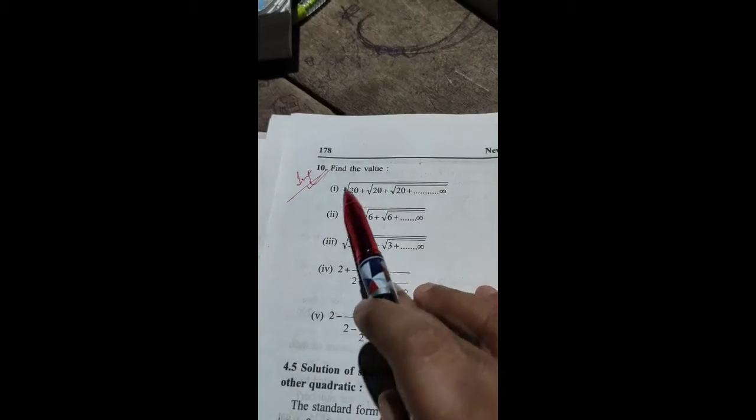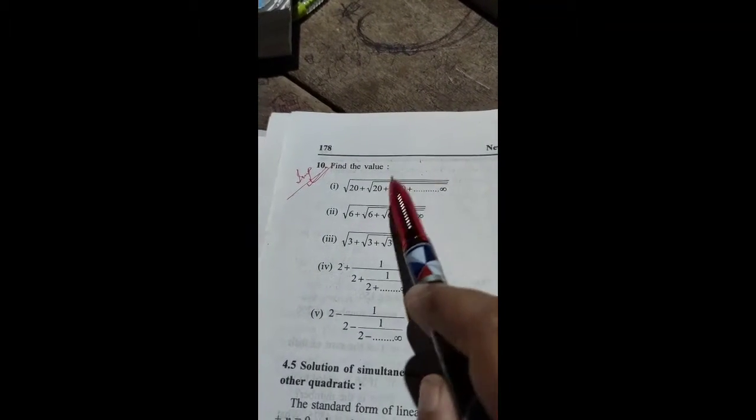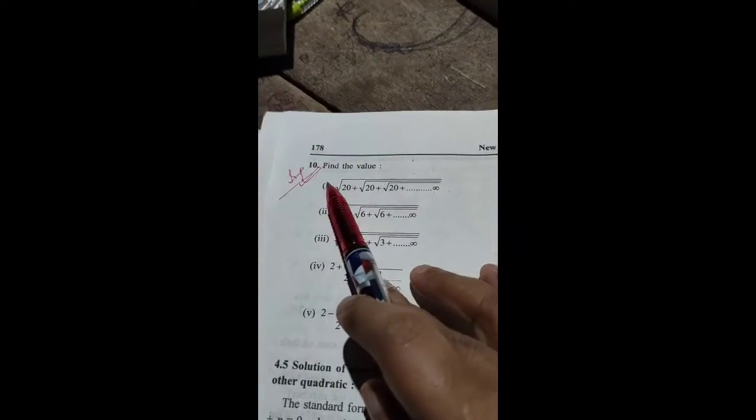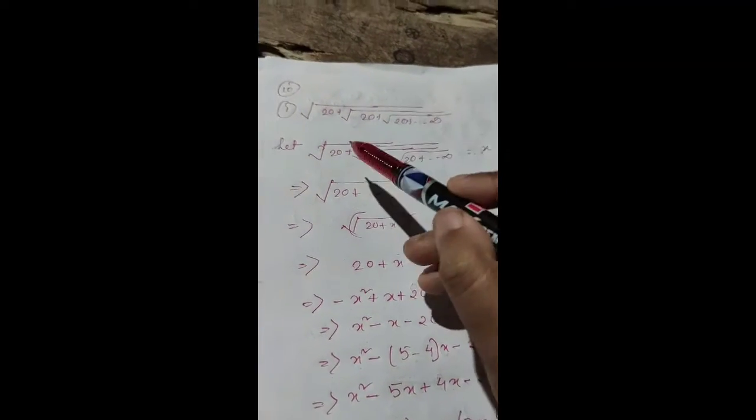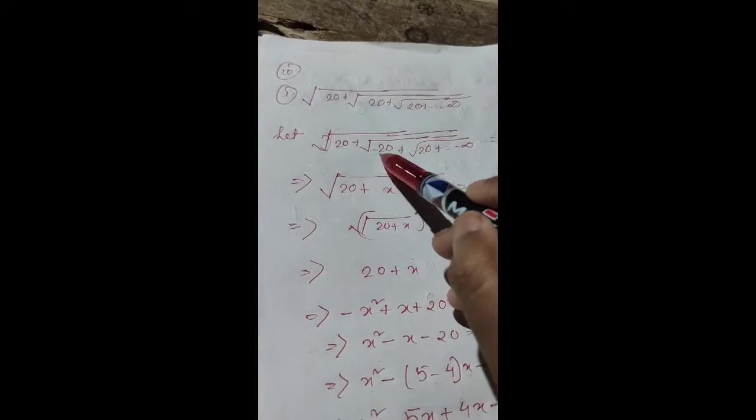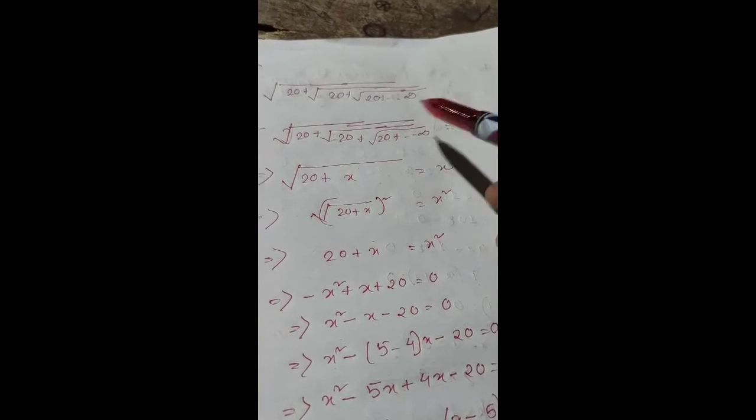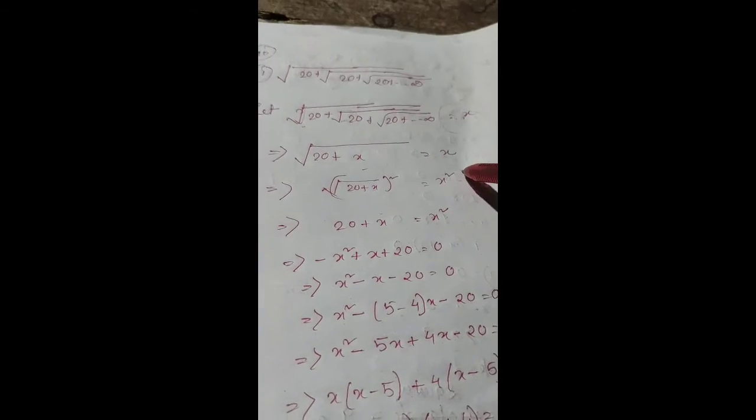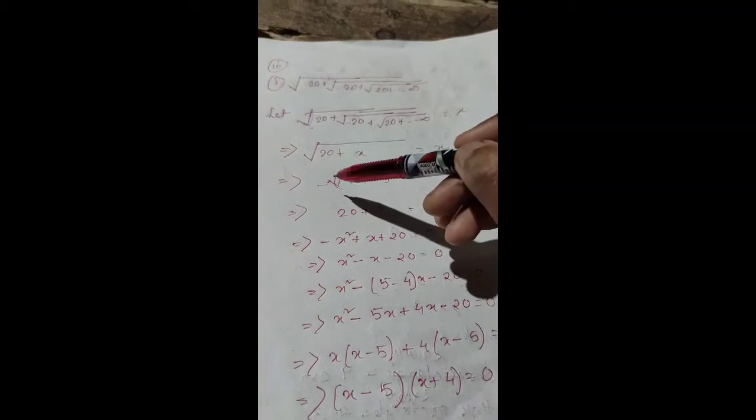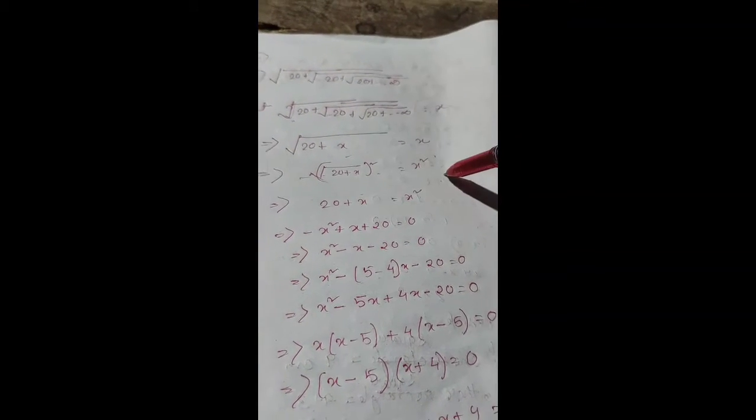So root of 20 plus root of 20 plus root of 20 plus continuing infinitely, find the value. Let x equal to root of 20 plus x, since it continues. So x = √(20+x). Square both sides.